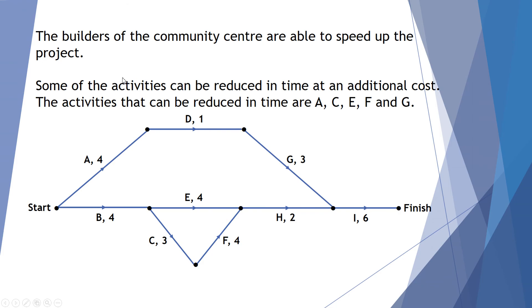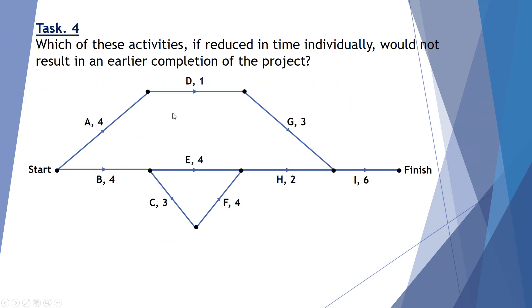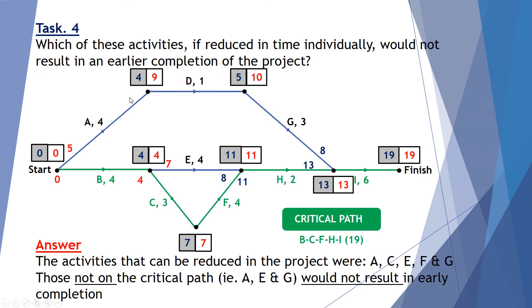Now the builders of the community center are able to speed up the project. Some of the activities can be reduced in time at an additional cost. So the activities that can be reduced are A, C, F, E and G. So which of these activities if reduced in time individually would not result in an early completion of the project. So it would not result. So again, we can look at reducing A, C, E, F and G. Only those that are not on the critical path would not result in an early completion.